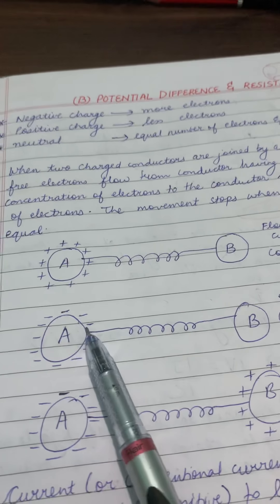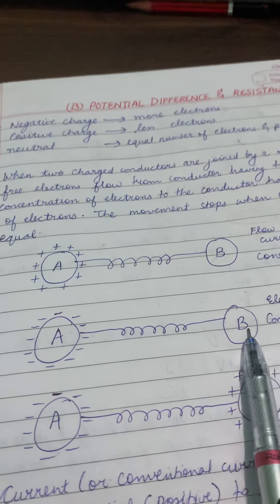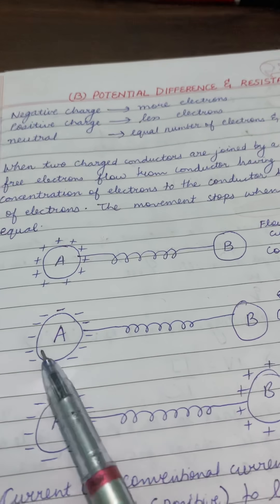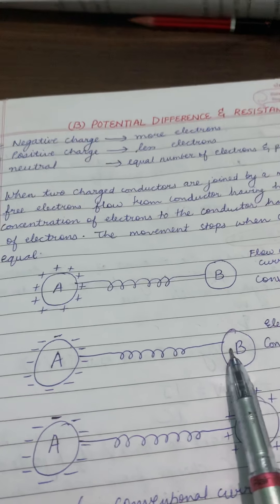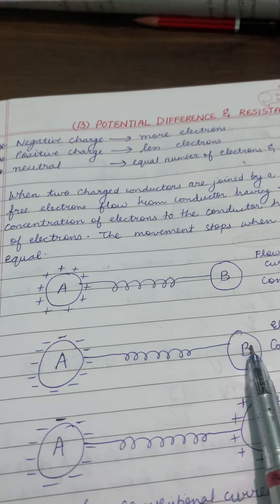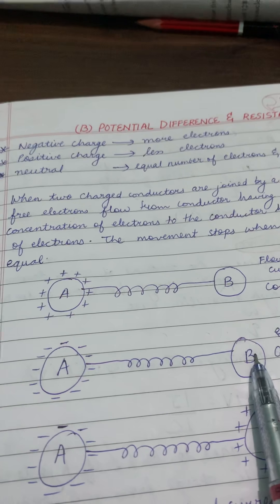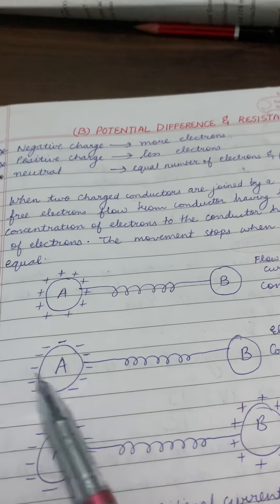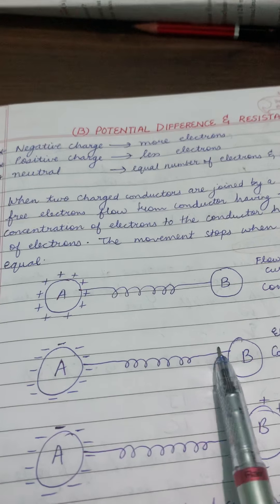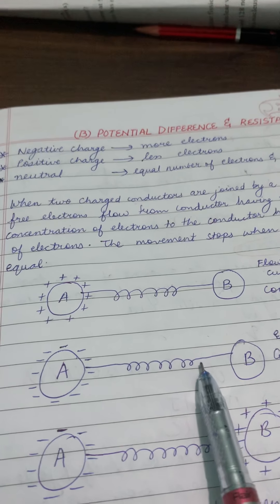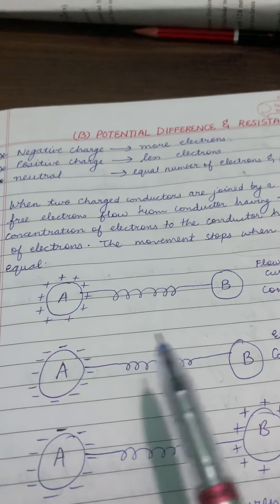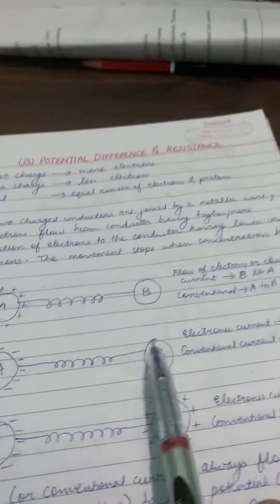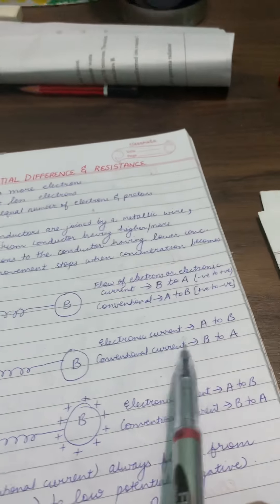Next, A is negatively charged and B is uncharged. Negative means more electrons, uncharged means equal. So electronic current flows from more to less — that is, from A to B. And conventional current is opposite, flowing from positive to negative — that is, from B to A.